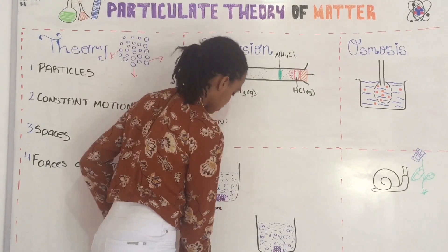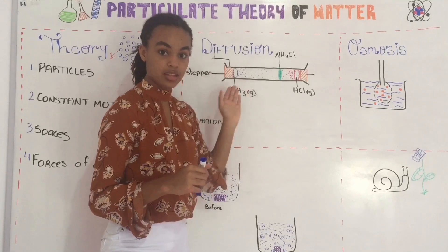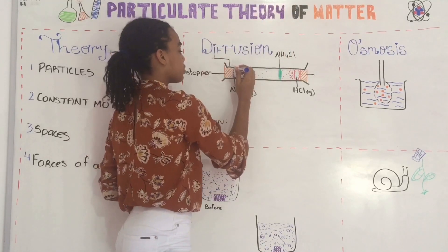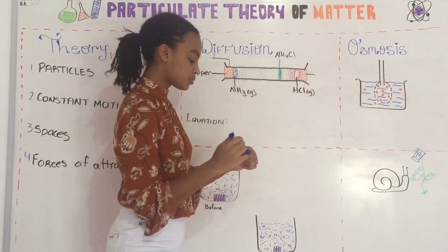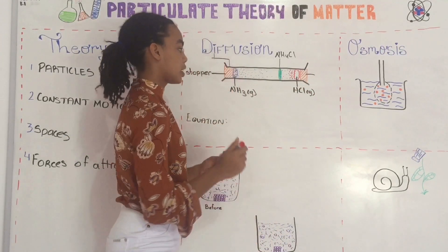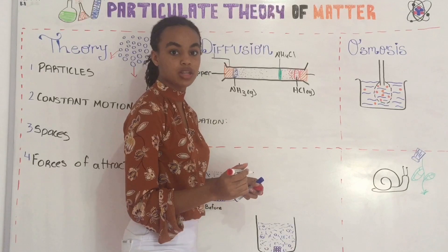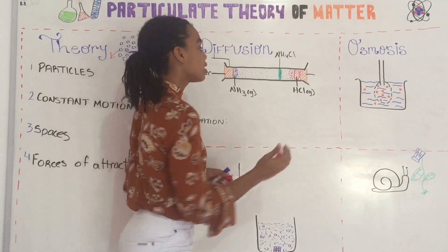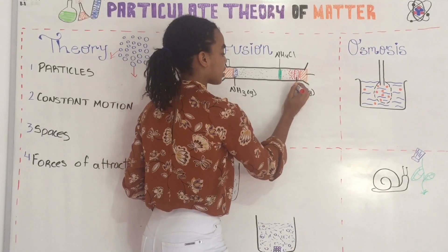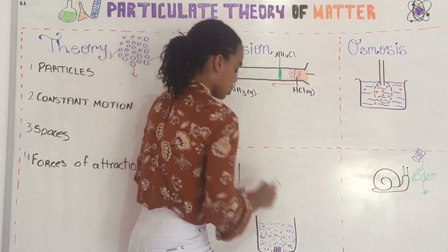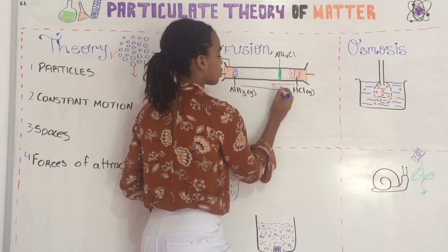So what happens here: when you soak the ammonia in the cotton swab, it has high concentration at the end of the ammonia cotton swab. So the particles are moving from a region of high concentration, which is this swab, to a region of low concentration, which is the opposite end. The same goes for hydrogen chloride — the cotton swab is soaked in some hydrogen chloride, so this one has a high concentration of hydrogen chloride. So it's moving from a region of high concentration to low concentration this way, and ammonia is moving from a region of high concentration to a region of low concentration this way.